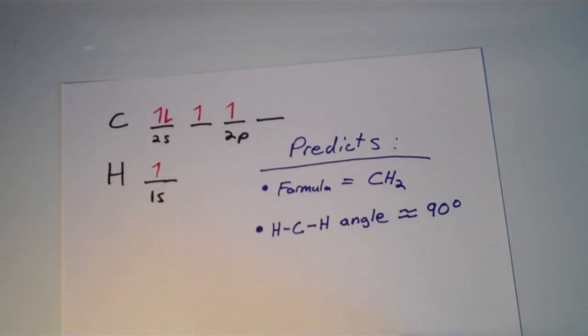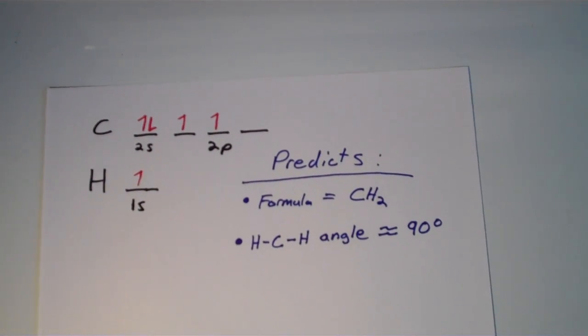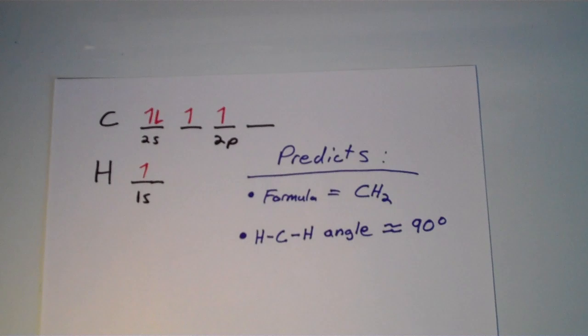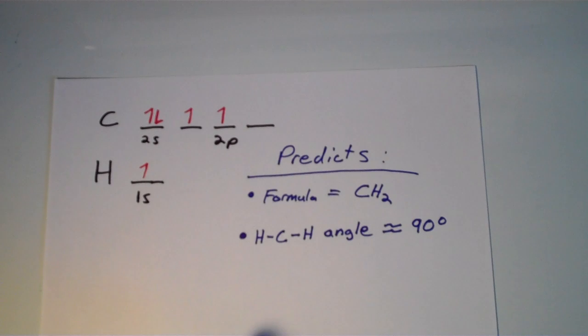So a good place to start would be to look at the electron configurations, the ground state electron configurations of both carbon and hydrogen. So carbon has the ground state electron configuration 2S2, 2P2. Hydrogen, obviously, is just 1S1. So we have two half-filled 2P orbitals on carbon, and we have one half-filled 1S orbital on hydrogen.